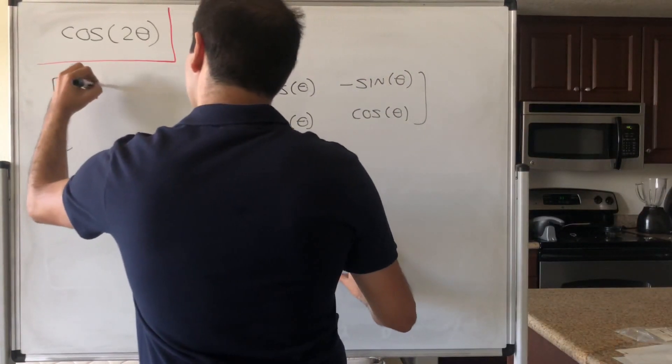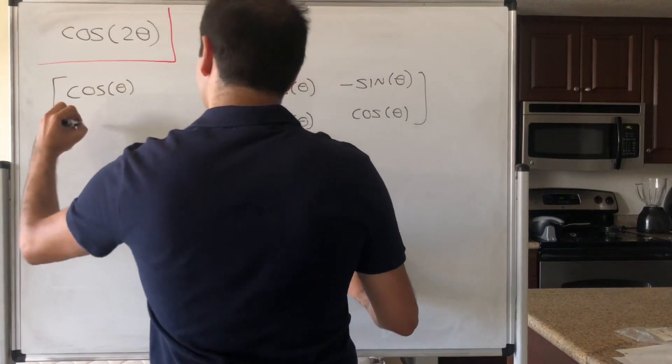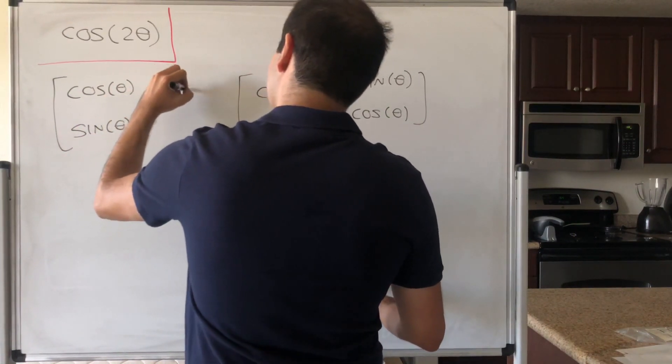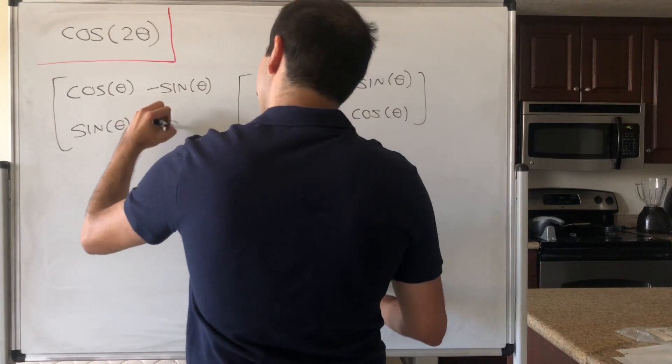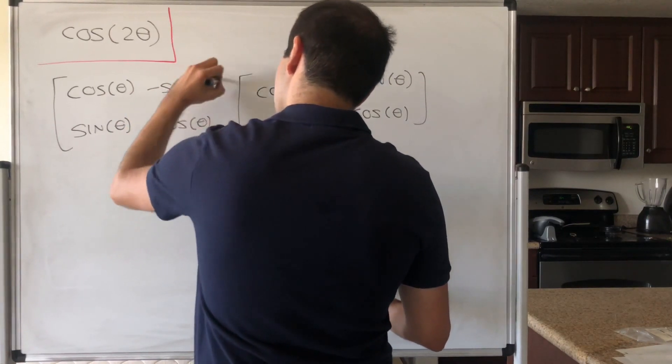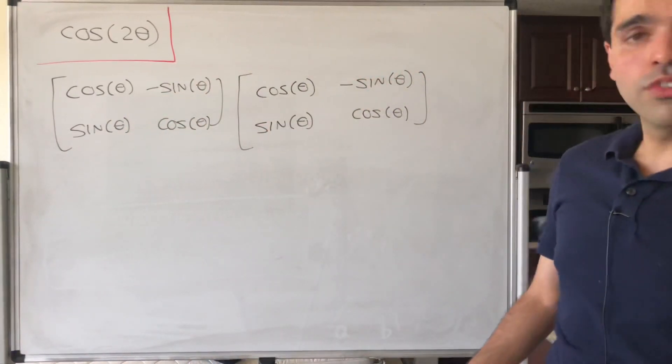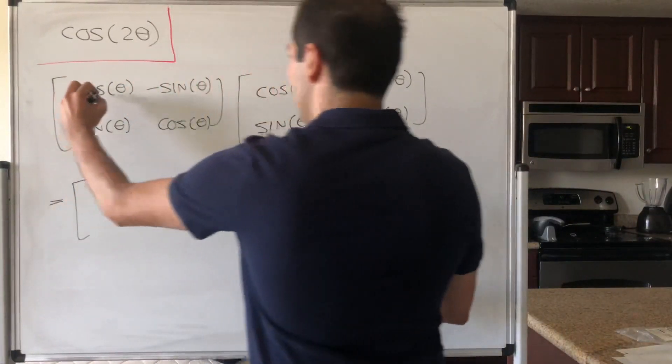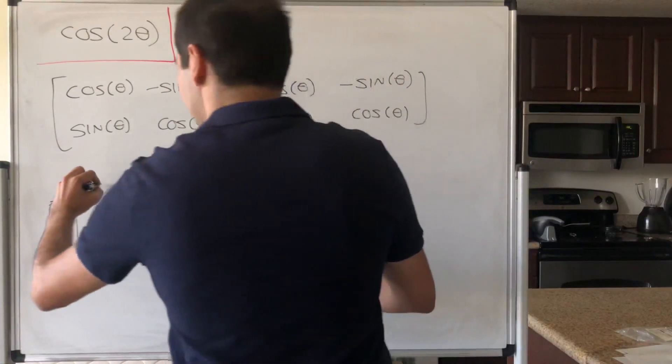So what happens if you multiply this by itself? Cosine of theta, sine of theta, minus sine of theta, cosine of theta. Well, let's try to do the matrix multiplication. Well, what this gives you is, cosine of theta, cosine of theta.